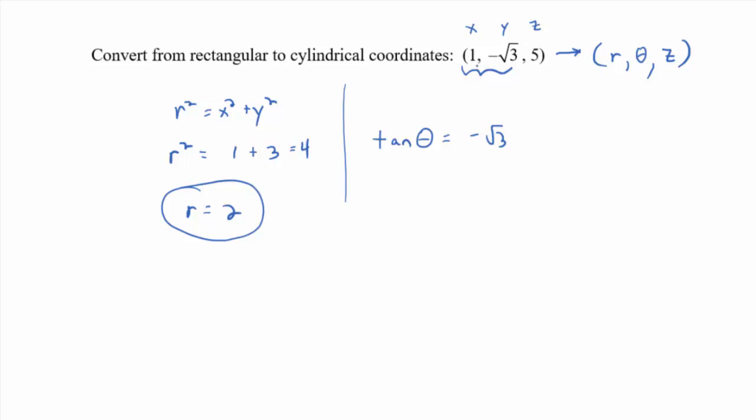And if you were to graph just the ordered pair 1, negative root 3 in the xy plane, what quadrant would it be in? Go right 1 and down root 3. Quadrant 4.